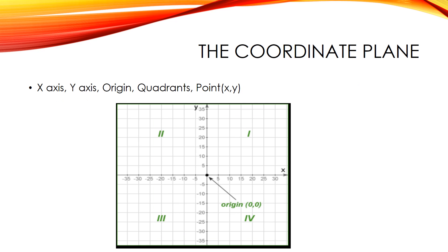The x-axis is the horizontal scale and is usually drawn with the zero point in the middle. Values to the right are positive and those to the left are negative. The y-axis is the vertical scale and is also drawn with a zero point in the middle. Values above the origin are positive and those below are negative.